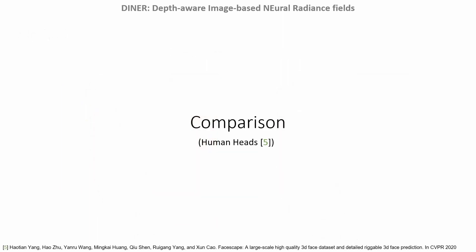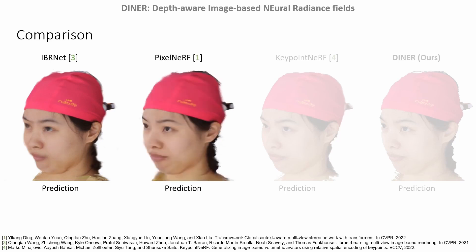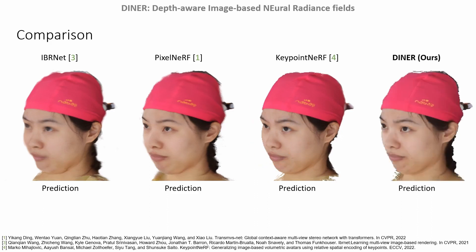We compare DINER against state-of-the-art methods for the task of novel view synthesis of human heads. IBRNET, a model that blends the source images directly, can reconstruct high-frequency details like text, but blending artifacts occur which cause a high identity gap. PixelNeRF reconstructs a more accurate head shape, but produces blurry results. KeypointNeRF, which leverages facial landmarks to guide the reconstruction, synthesizes high-frequency details better, but distorts the head shape. Our method reproduces the target identity more accurately than all state-of-the-art methods and outperforms them in terms of high-frequency details.